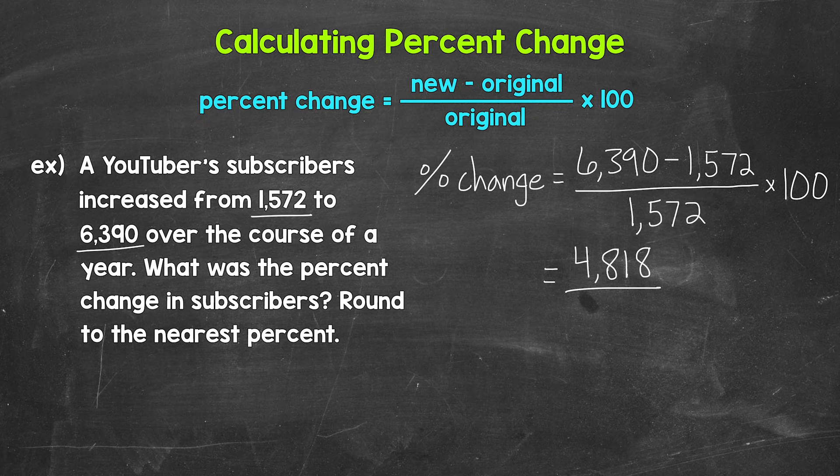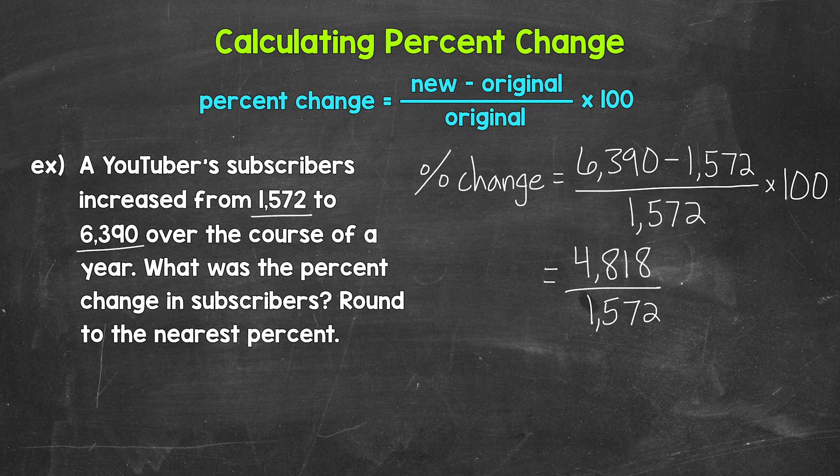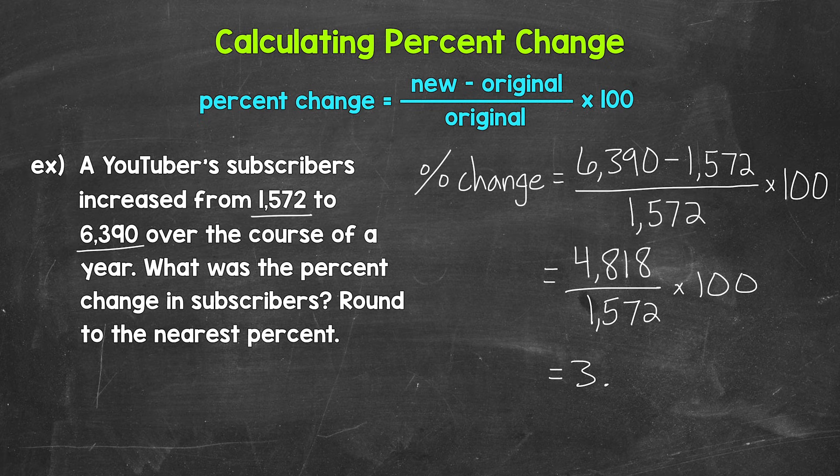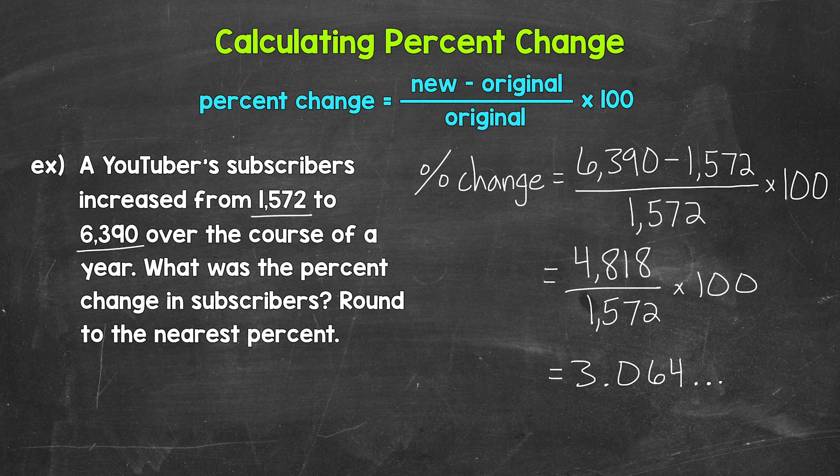So now we need to divide that amount of change by the original value and then multiply by 100. So let's divide now. We have 4,818 divided by 1,572. That gives us 3.064, and that decimal continues on. So let's stop there and we will end up rounding.